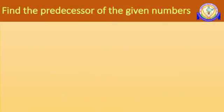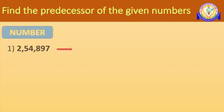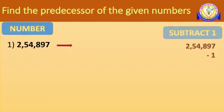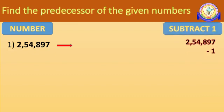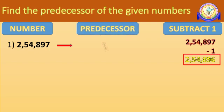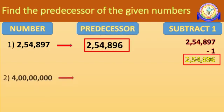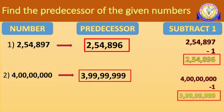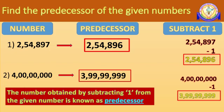The predecessor of 2,54,897 is 2,54,897 minus 1, which is 2,54,896. Similarly, the predecessor of 4 crore is 4 crore minus 1, which is 3 crore 99,99,999. Therefore, by subtracting 1 we get the predecessor of the given number.